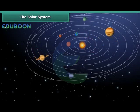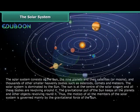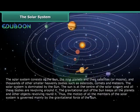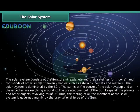The Solar System. The Solar System consists of the Sun, the nine planets and their satellites or moons and thousands of other smaller heavenly bodies such as asteroids, comets and meteors. The Solar System is dominated by the Sun. The Sun is at the center of the Solar System and all these bodies are revolving around it. The gravitational pull of the Sun keeps all the planets and other objects revolving around it. Thus the motion of all the members of the Solar System is governed mainly by the gravitational force of the Sun.